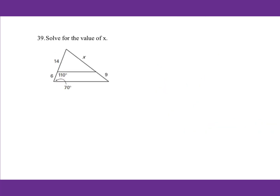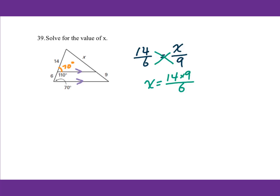For number 39, solve for X. This angle is 70 degrees. Since corresponding angles are equal, the two lines are parallel to each other. Therefore we write the ratio: 14 over 6 equals X over 9. Cross multiply: X equals 14 times 9 over 6, which equals 21.